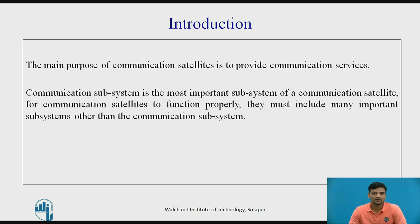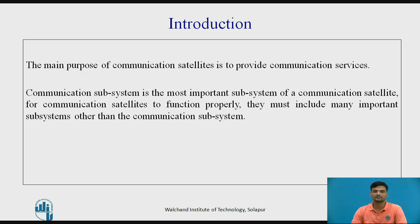There are three types of earth orbit satellites: geosynchronous earth orbit satellite, medium earth orbit satellite, and low earth orbit satellite. In satellite communication there are two types of segments: earth segment and space segment. Types of subsystems in the space segment are attitude and orbit control subsystems, telemetry tracking, command and monitoring subsystems, power subsystems, communication subsystems, and a separate antenna subsystem which can also be combined with the communication subsystem.